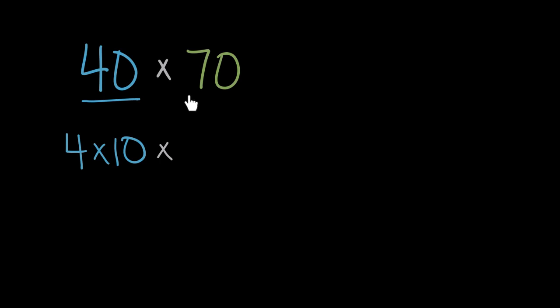And then for my 70, same thing, I can break this up and write seven times 10. So these two expressions, 40 times 70 and four times 10 times seven times 10, are equal, they're equivalent, so they'll have the same solution.